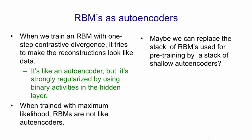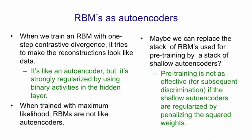Since we can view a restricted Boltzmann machine as a kind of strongly regularised autoencoder, maybe we can replace the RBMs that we use for pre-training with a stack of autoencoders. It turns out that if you do that, pre-training is not as effective — at least if you use shallow autoencoders that are regularised just by penalising the squared weights. So stacking these autoencoders doesn't work as well as stacking restricted Boltzmann machines.